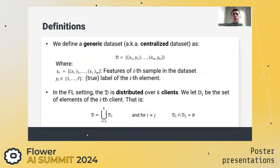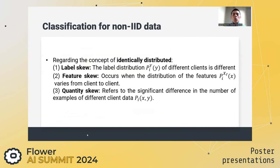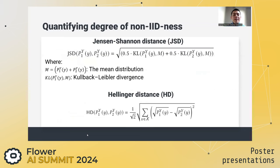We have formally defined what we meant by a centralized dataset and distributed or federated datasets, and from there we formally defined label and feature skew distributions, which led to the definition of label skew, feature skew, and quantity skew. Finally, we have introduced Jensen-Shannon distance and Hellinger distance to quantify the level of non-IIDness in federated learning.